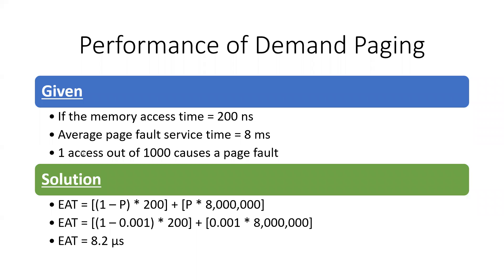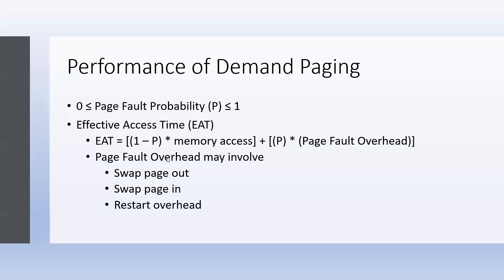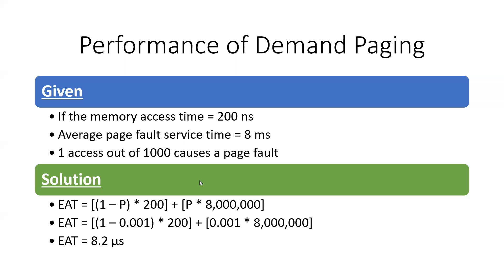Now we will apply the formula: Effective Access Time equals (1 minus P) multiplied by 200 nanoseconds, plus P multiplied by 8 milliseconds.